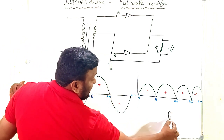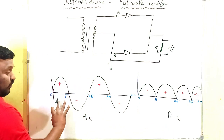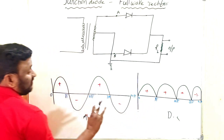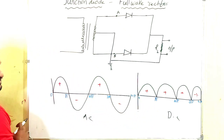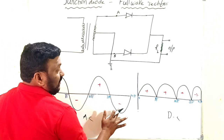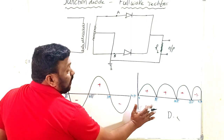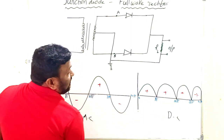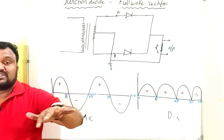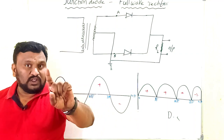The process of converting alternating current to direct current is called rectification. In the input we have positive cycle, negative cycle, positive cycle, negative cycle. In the output — the direct current — we have only positive cycles. This is the rectification process. The half wave rectifier consists of only one diode, while the full wave rectifier consists of two diodes.